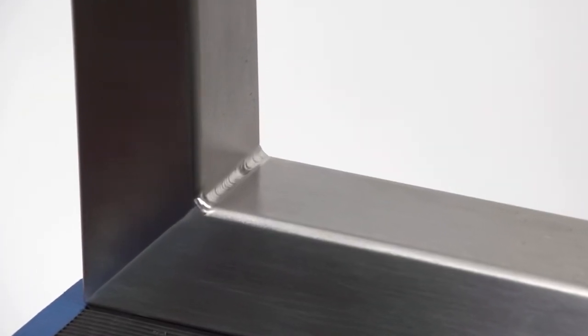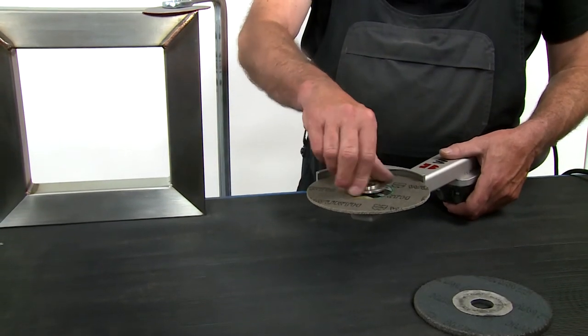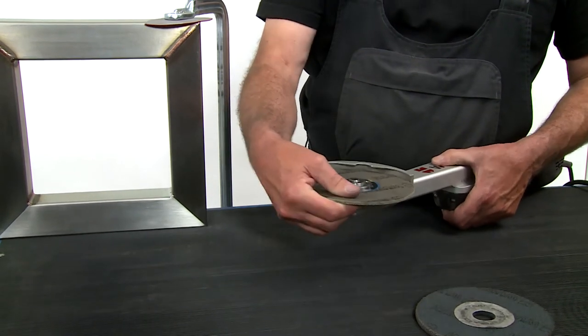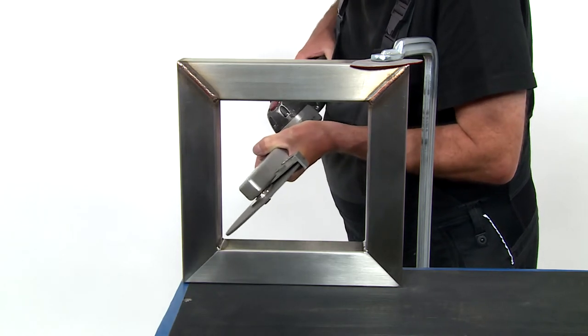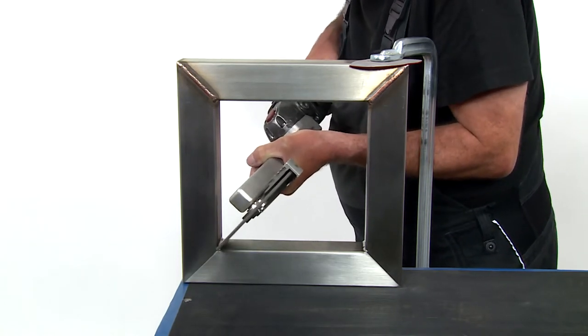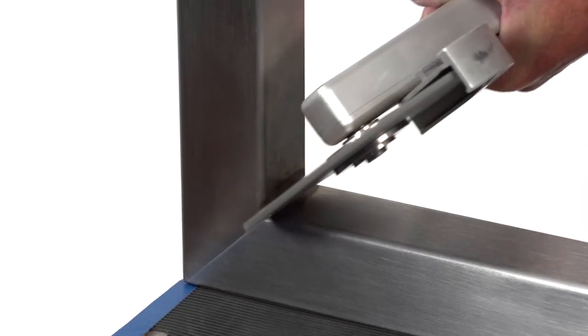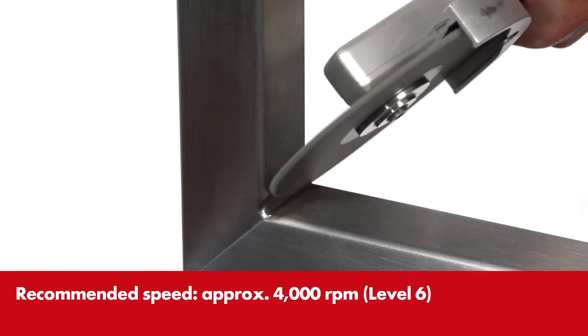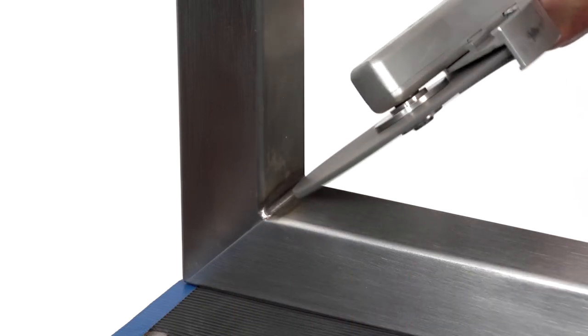If the weld seam in the fillet is to be removed completely, you need the fillet weld sander again. This time with a hard pressed fleece disc with hardness grade 7 and a high speed. Make sure that the disc is moved exactly over the weld seam. Otherwise, hollows arise to the left and right of this which cannot be polished out.